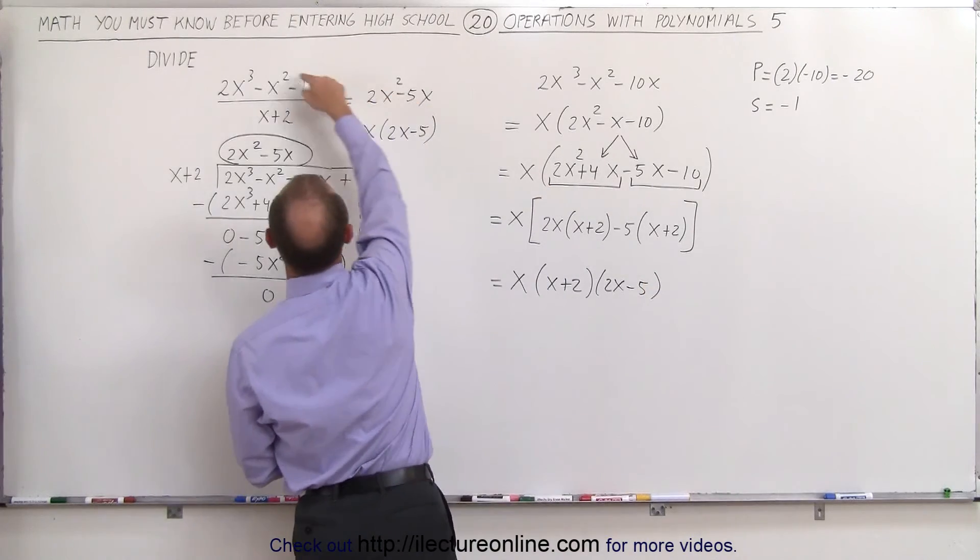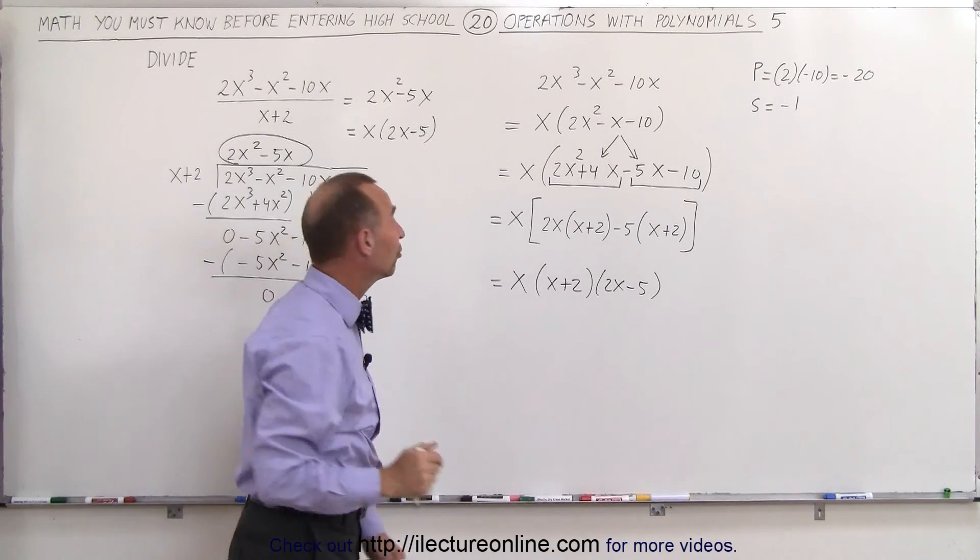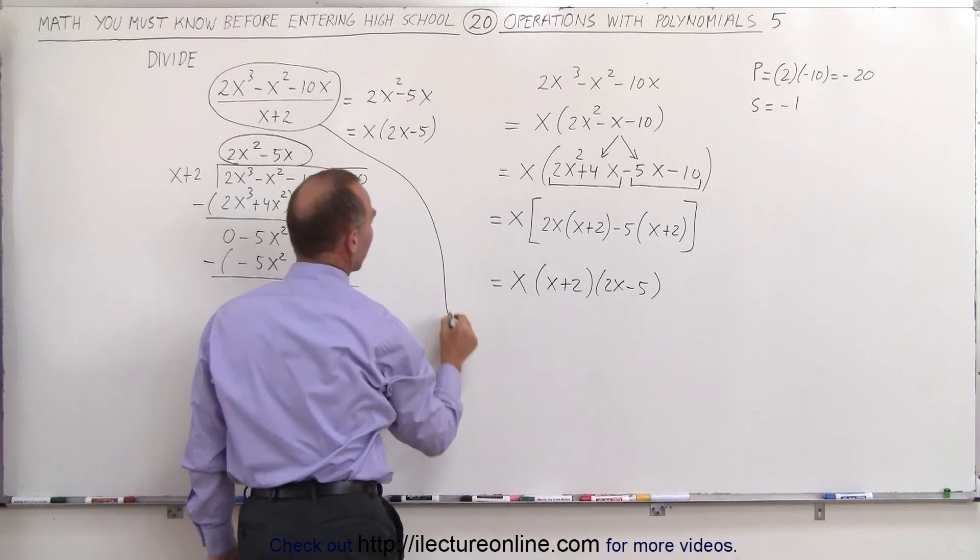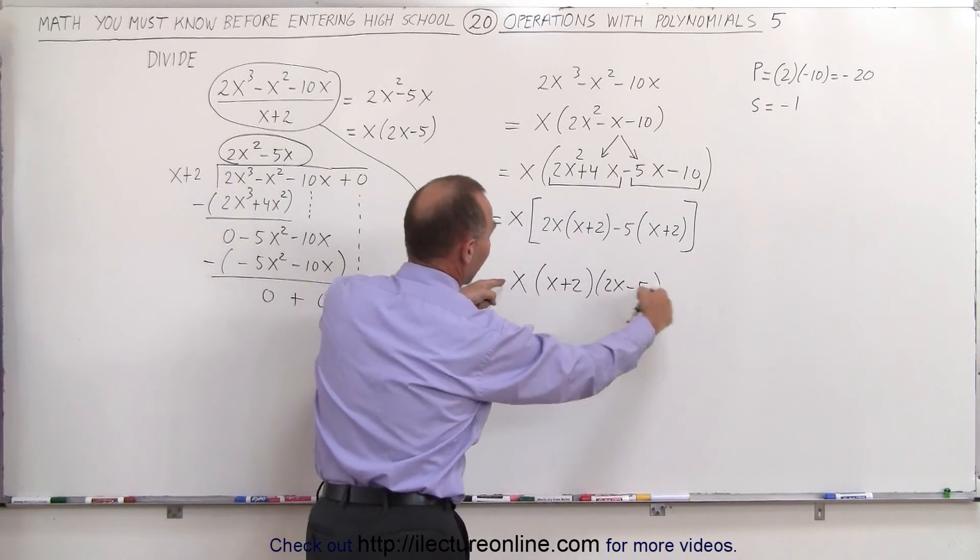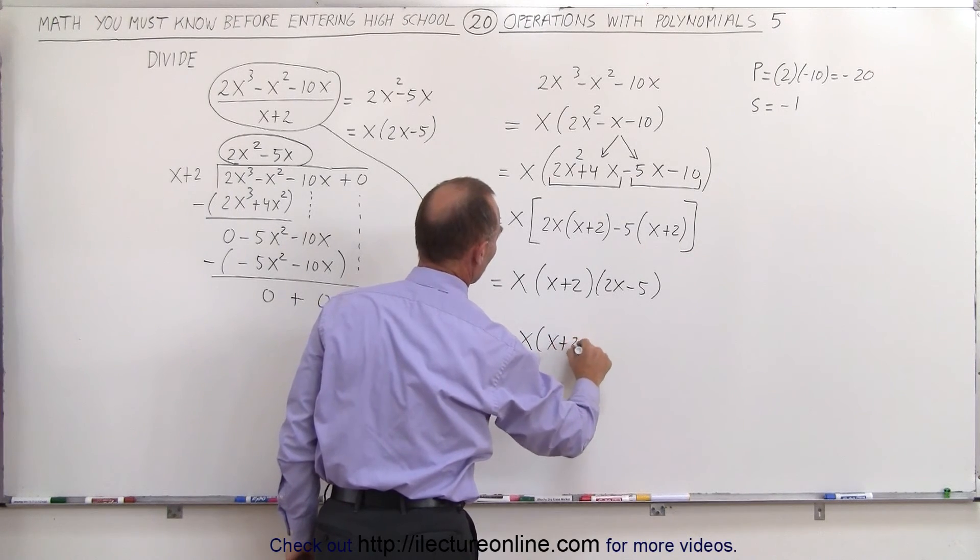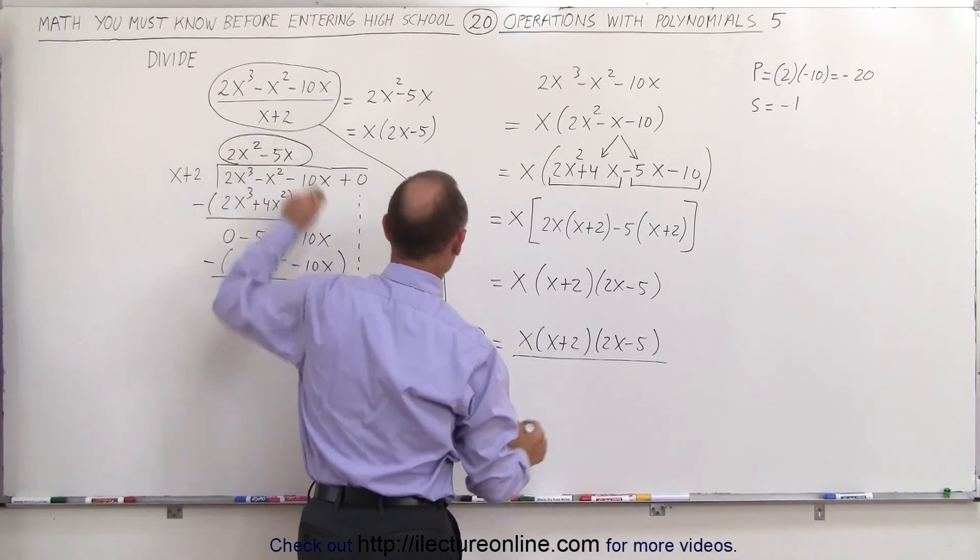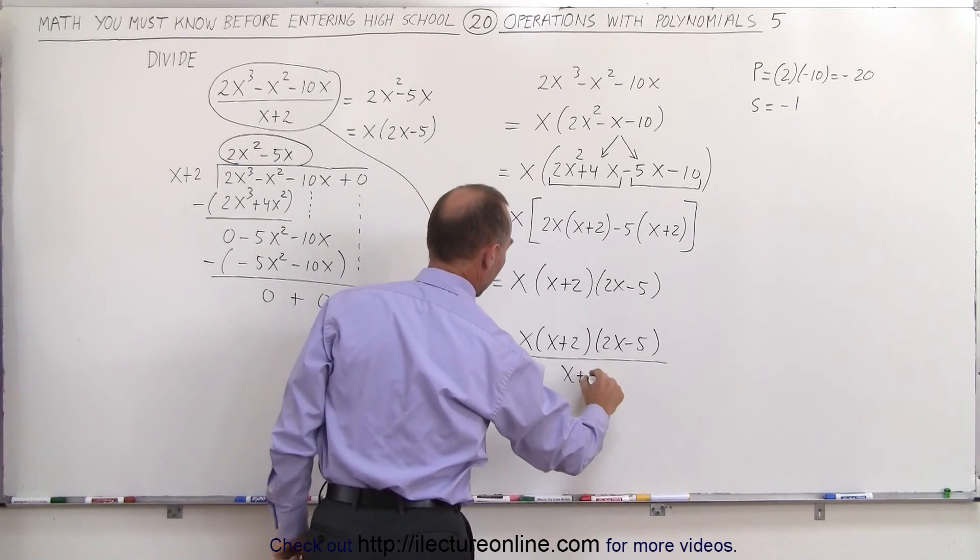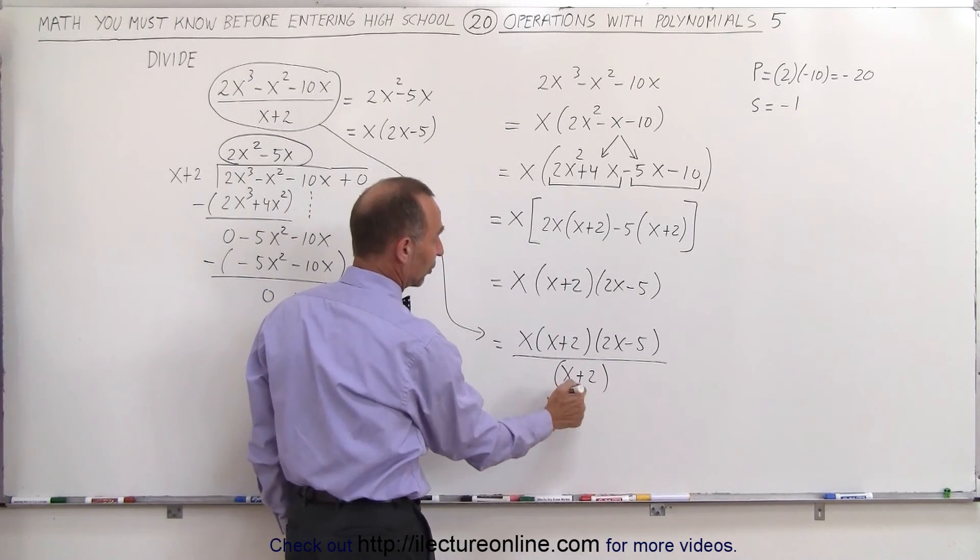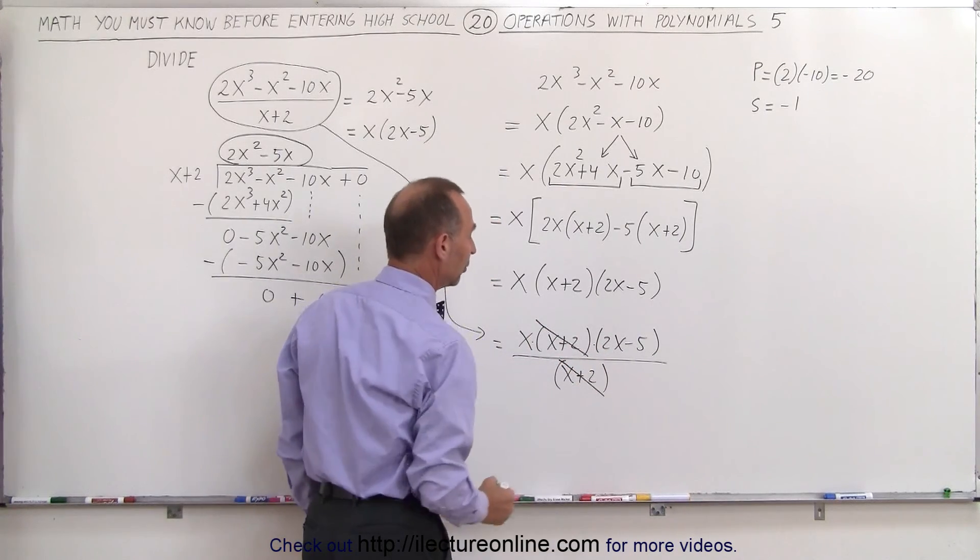So what I've done now is I've taken my numerator and factored it. I can take this problem and rewrite it as follows: I can write the numerator now in my factored form, so this is equal to x times (x + 2) times (2x - 5) divided by (x + 2). But notice now that in the numerator I have x + 2 and in the denominator I have x + 2. Since this is multiplied here I can divide the x + 2, and I'm left with x times (2x - 5).